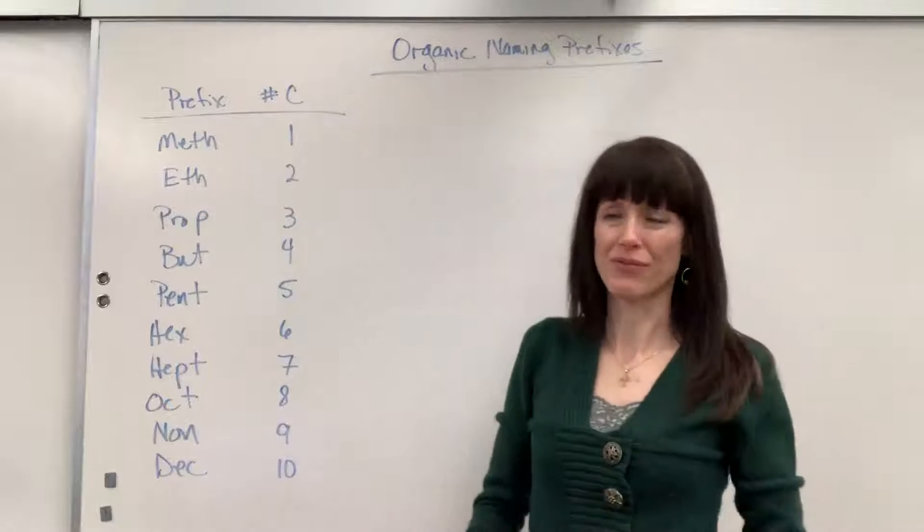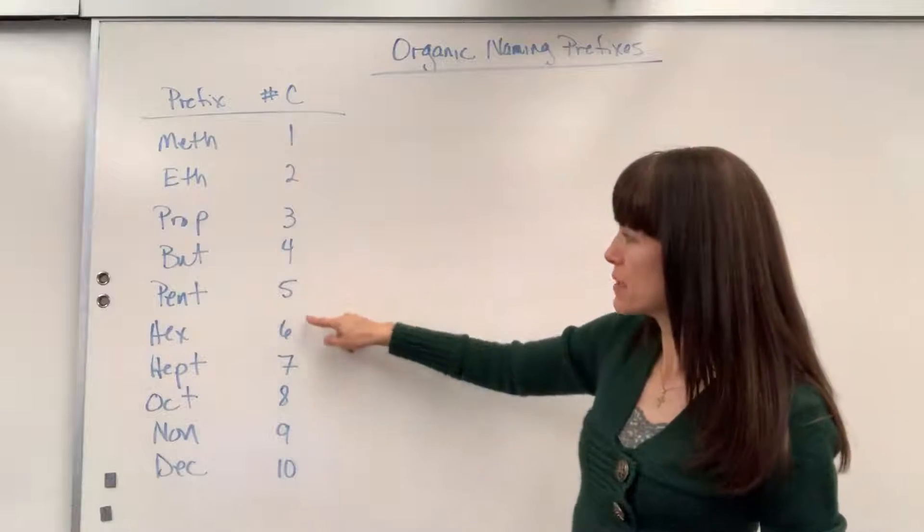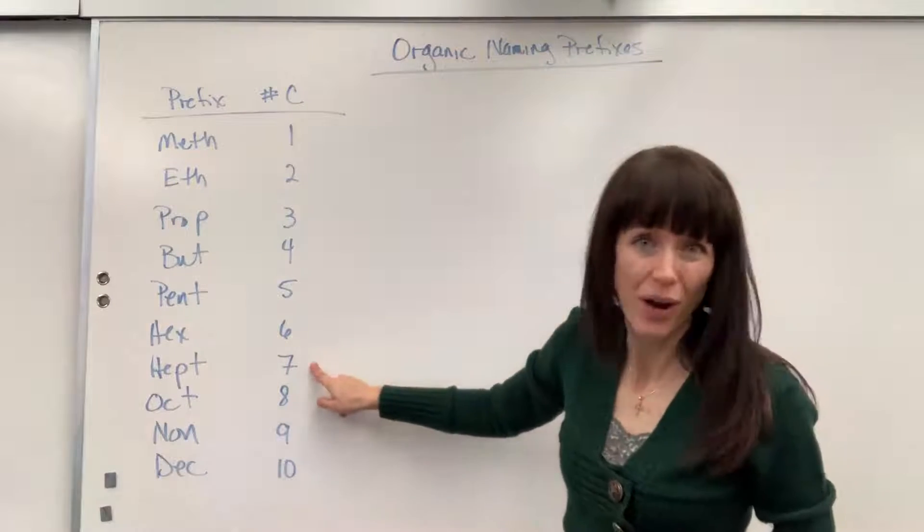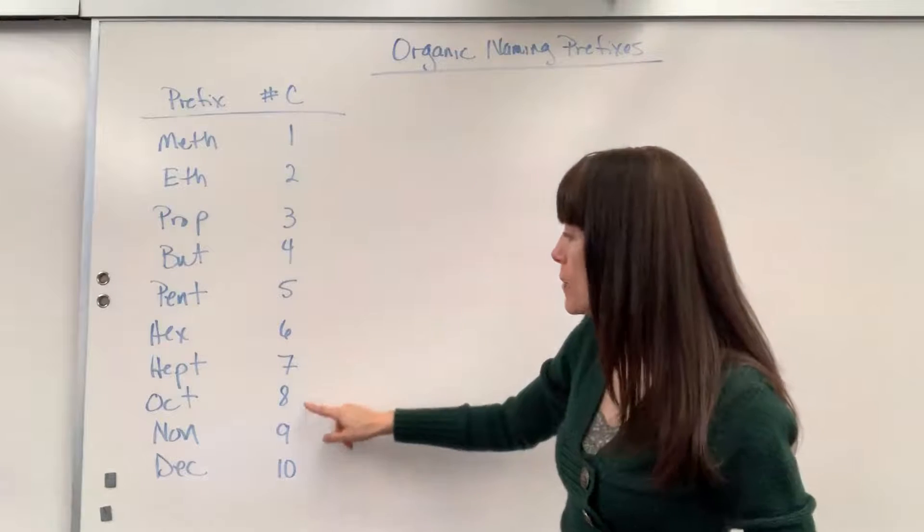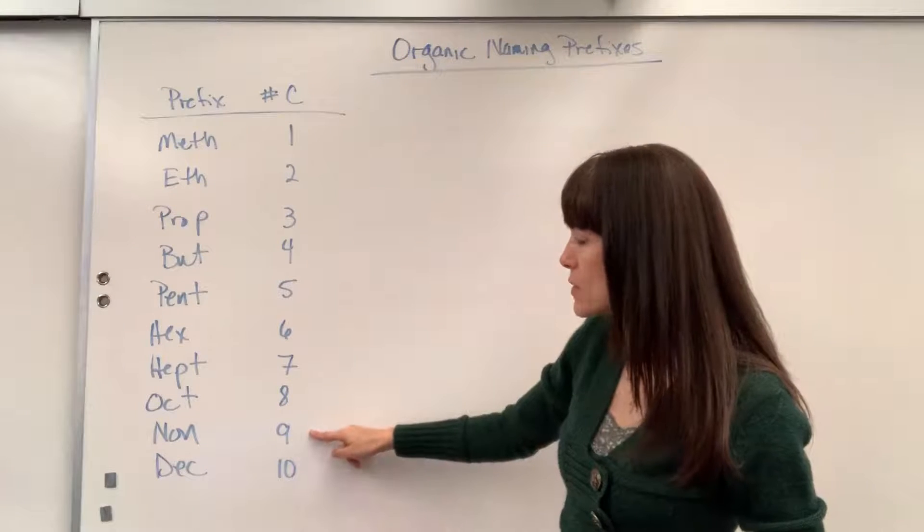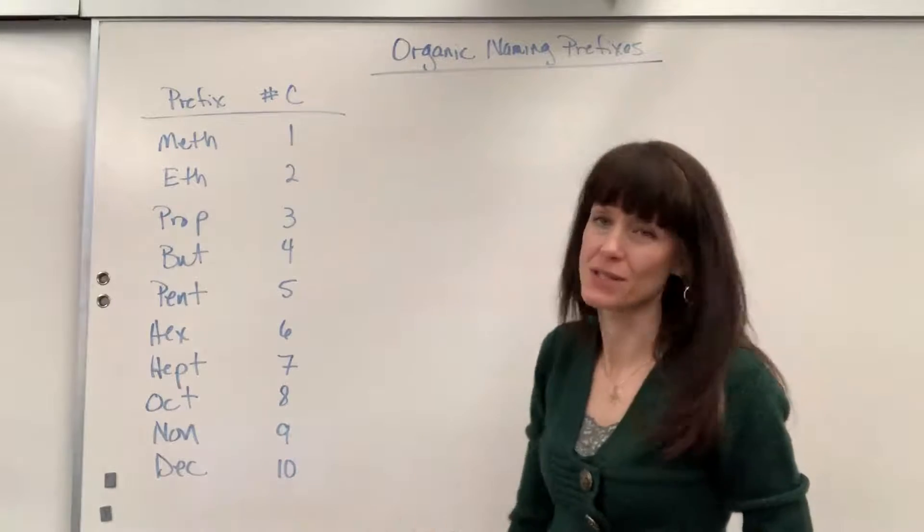And then from there, it just follows Greek prefixes. Five carbons pent, six carbons hex, seven carbons hept—not sept, but hept—eight carbons oct, nine carbons non, and ten carbons, of course, dec.